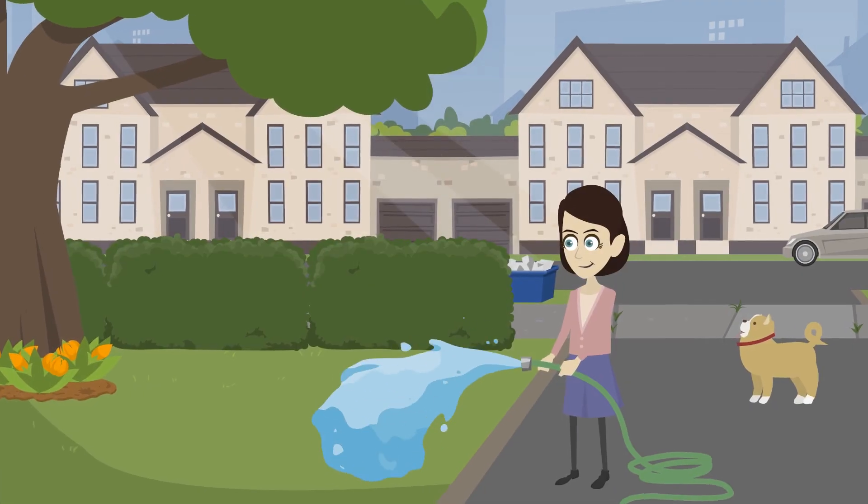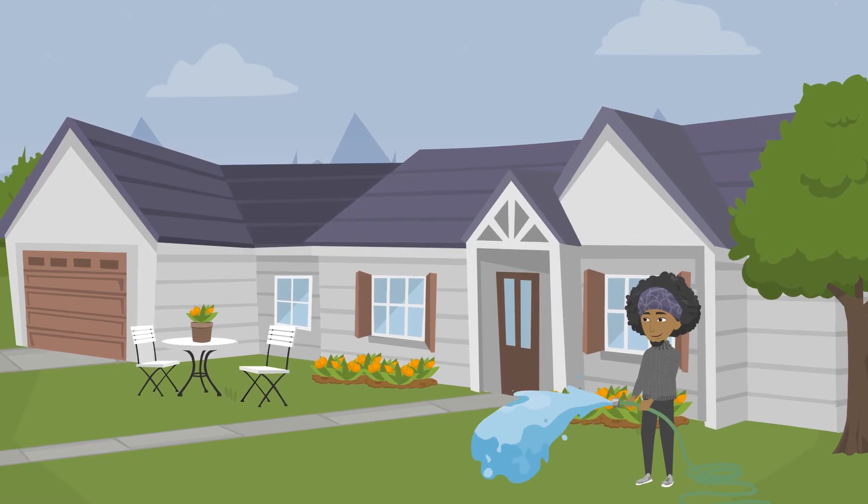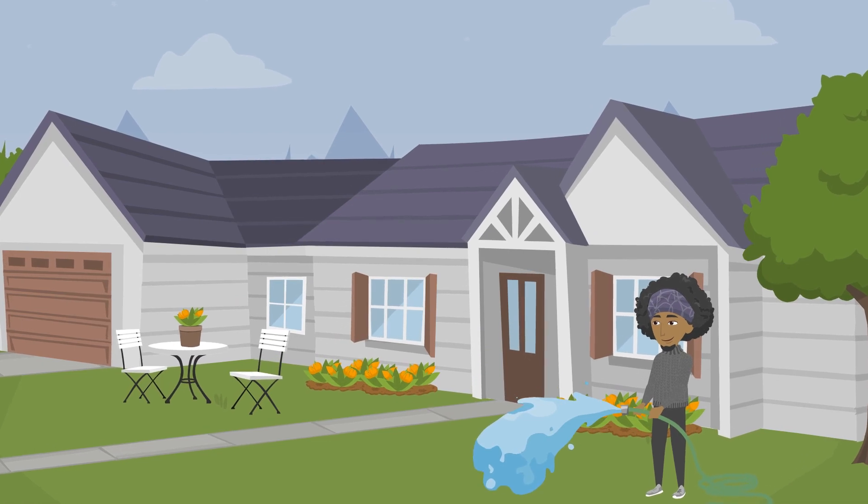It's like watering a lawn. Whether you water it once a week for 90 minutes or three times a week for 30 minutes, the lawn will stay greener over time if you do it at different times.